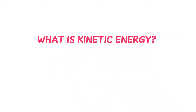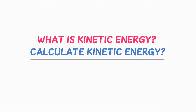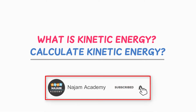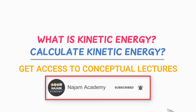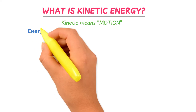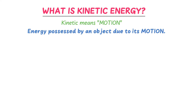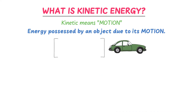What is kinetic energy and how can we calculate it? The word kinetic means motion. We define kinetic energy as energy possessed by an object due to its motion. For example, consider a fast-moving car — it possesses kinetic energy due to its motion.